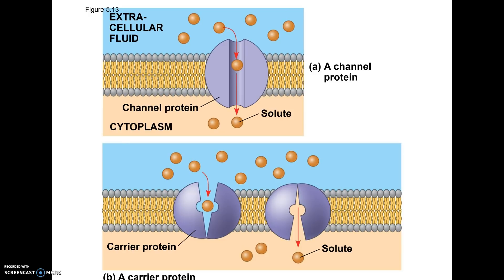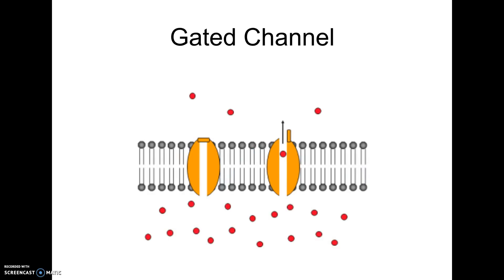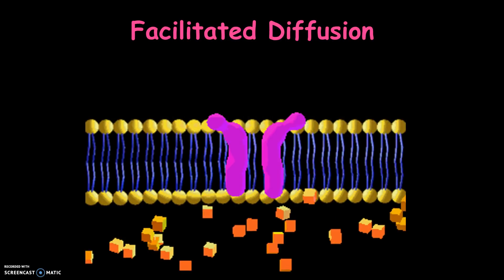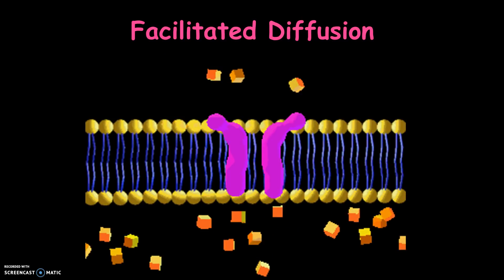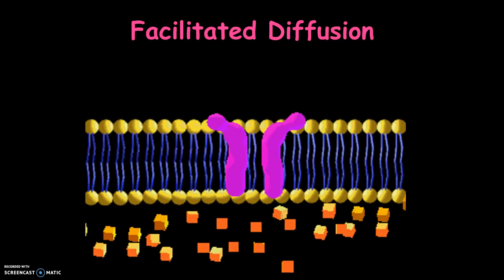In the first case it's a channel, meaning it just holds its shape. In the second case it's called a carrier — when the molecule goes in, it causes the protein to change shape. Notice there's no ATP in the picture. This is called a gated channel because it can open and close. The animation also shows facilitated diffusion — how these little blocks are going from high to low through a protein.